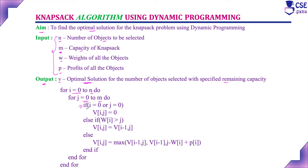Inside the loop, we first check the condition: if i equals 0 or j equals 0. That is, if the number of objects given is 0, we cannot select any object to place into the knapsack, so the profit is 0. Similarly, if the maximum capacity is 0, we cannot add any object into the knapsack. In both cases — either i equals 0 or the maximum capacity j equals 0 — the profit V(i, j) equals 0.